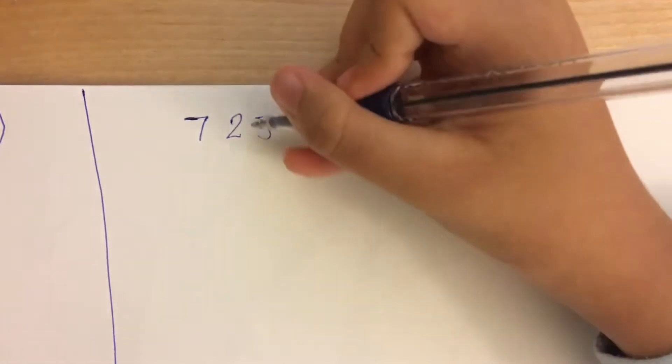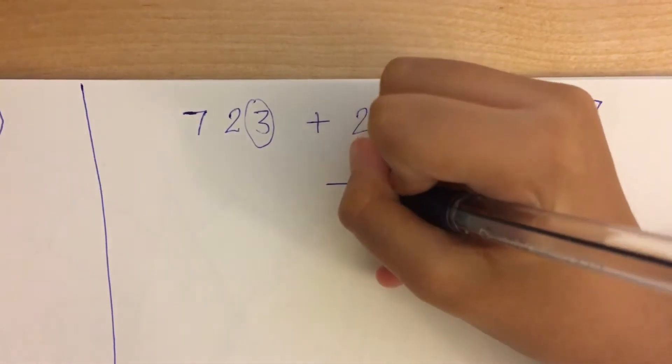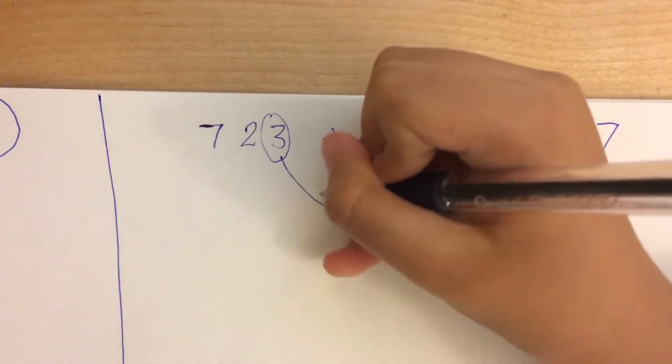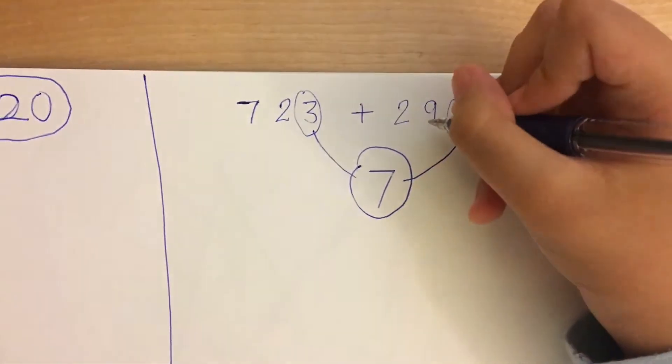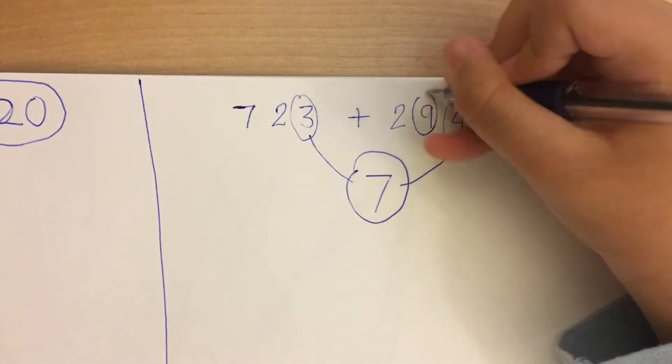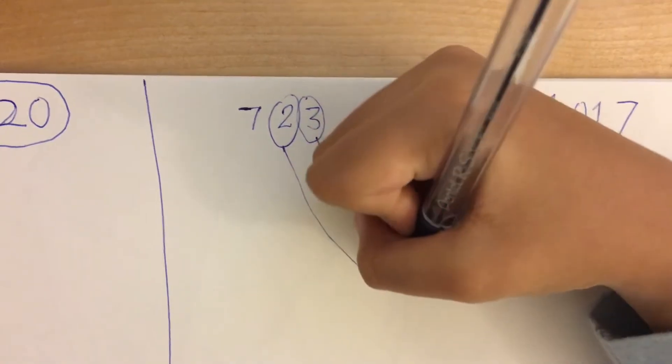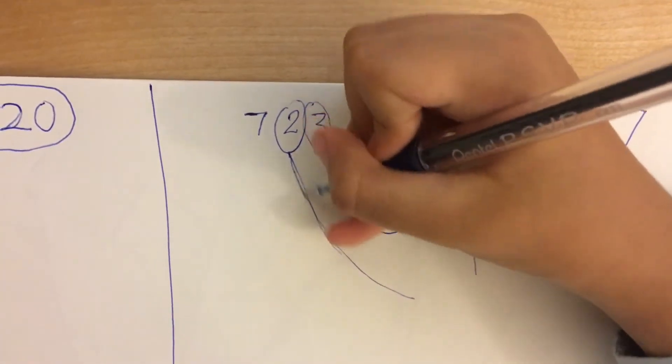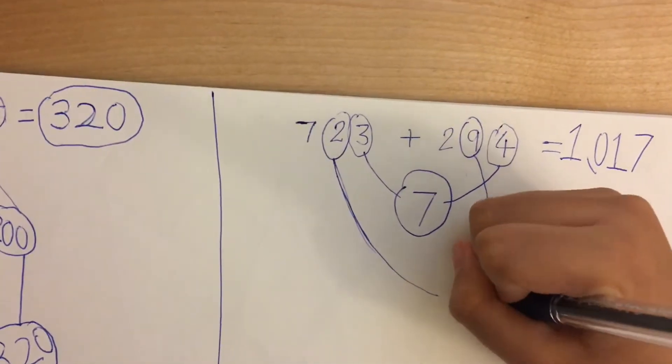So first we'll take the 4 and the 3 and put it together, you make 7. Then you get 90 and 20, and it makes 110.